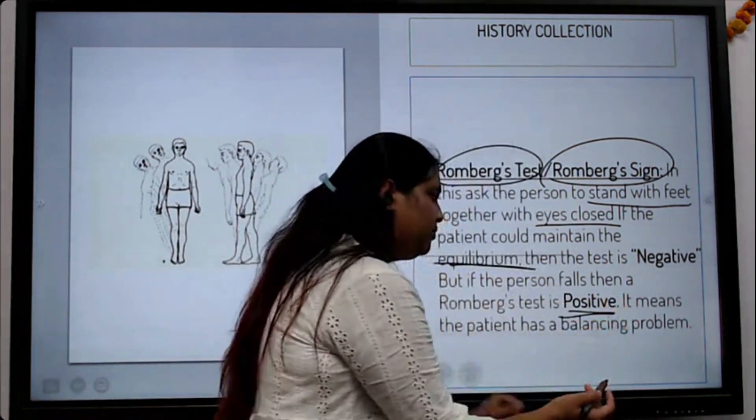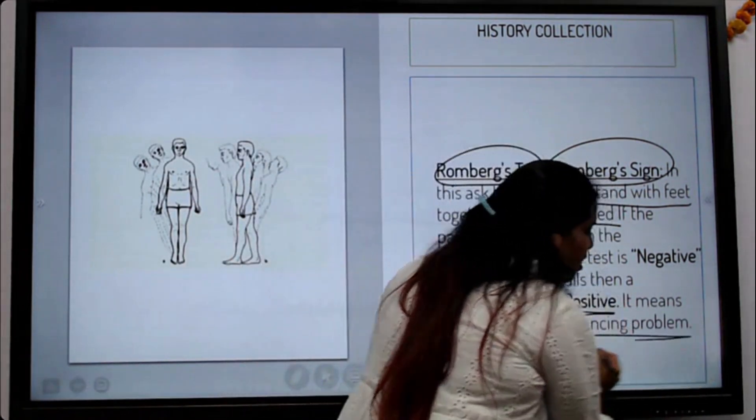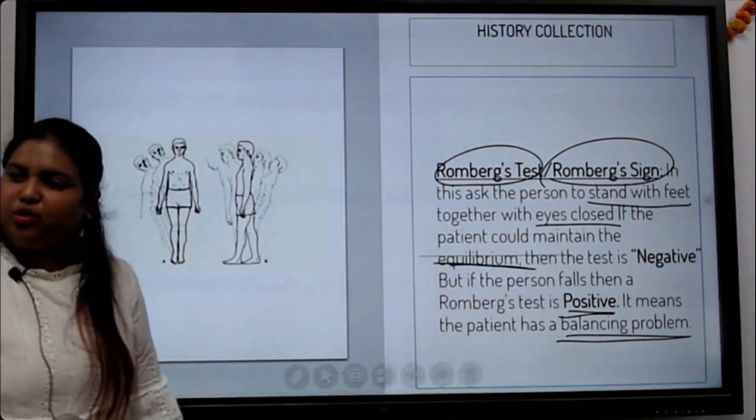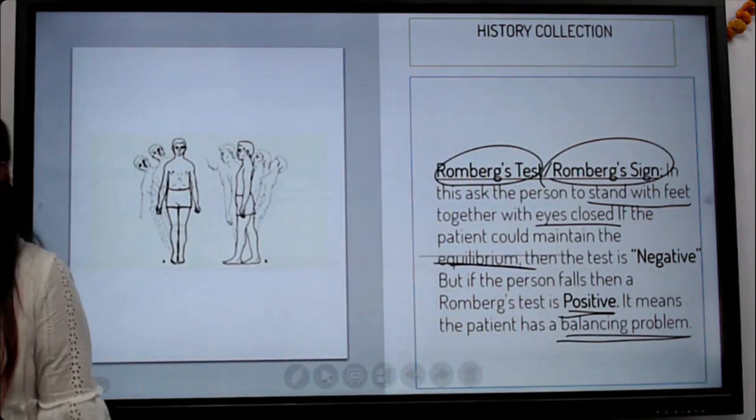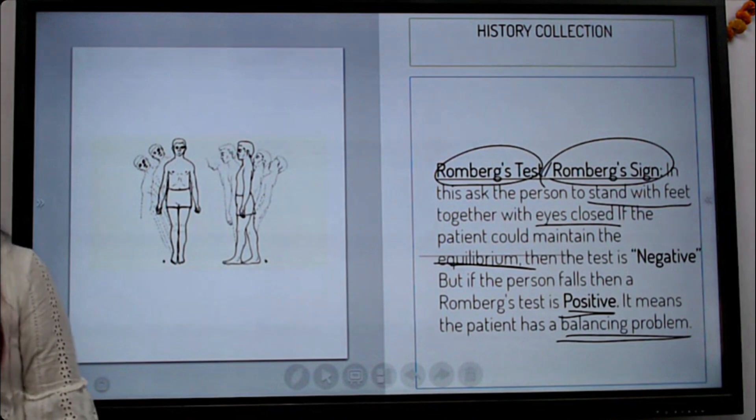So if it is positive, it means they have balancing problems. Positive means they have some balancing problems.